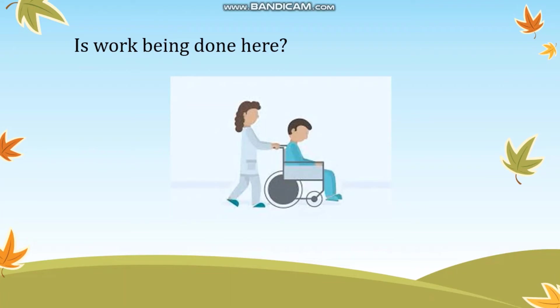For the next activity, you have to look at the pictures and decide if work is being done. In the first picture, you can see a doctor pushing a patient on a wheelchair. Do you think work is being done here? The answer is yes. Work is being done because the doctor is applying force away from her, she is pushing the patient, and the patient is also moving in the same direction. Therefore work is being done here.